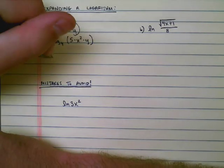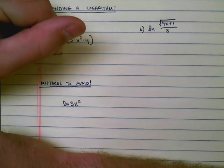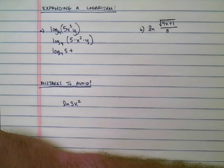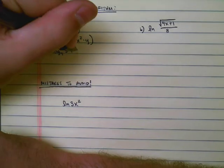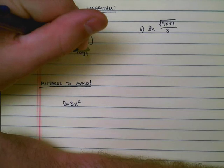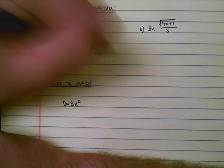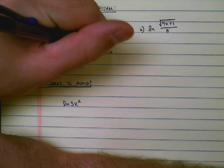So I'm going to rewrite this as log base 4 of 5 plus log base 4 of x cubed plus log base 4 of y.